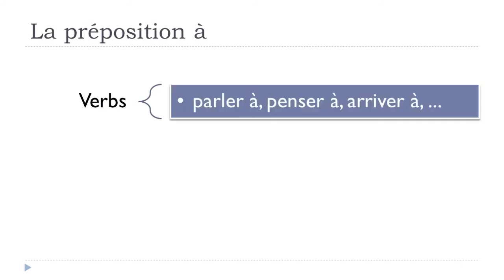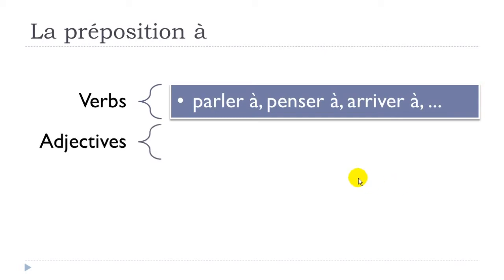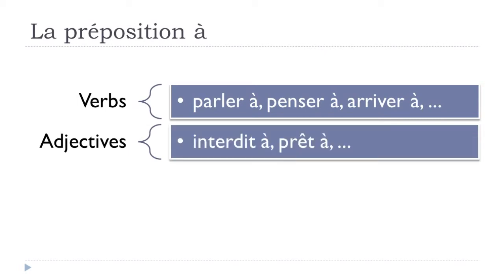Now let's see other uses of À with verbs and adjectives. Some verbs require this preposition: parler À (to talk to), penser À (to think about someone or something), réussir À (to succeed in doing something). Students tend to learn these verb-preposition combinations little by little. À is also used with adjectives: interdit À (forbidden), prêt À (ready).